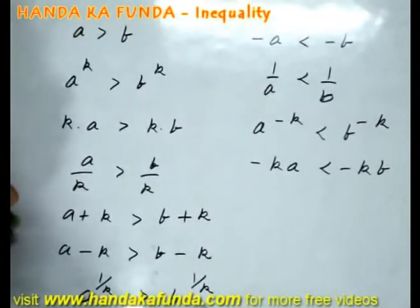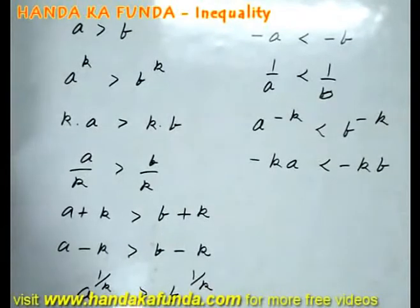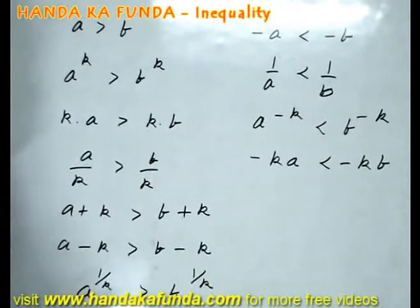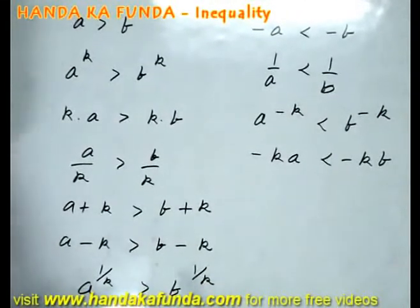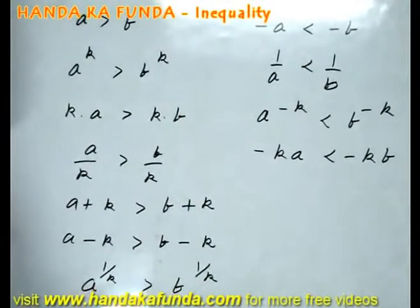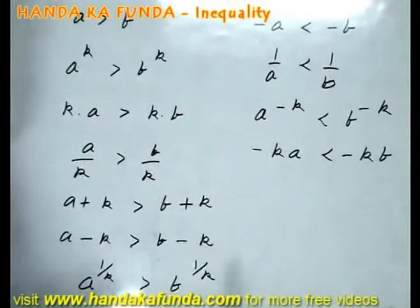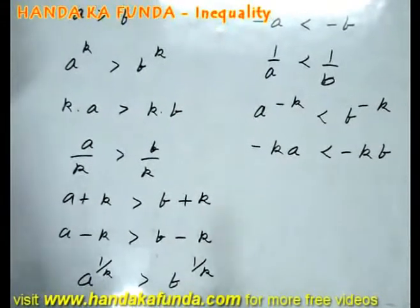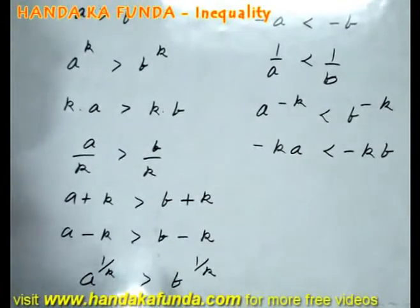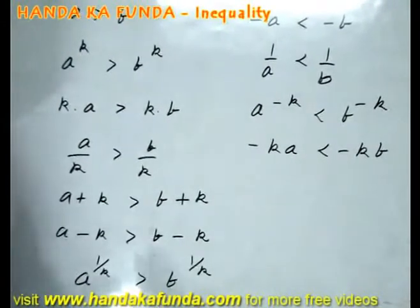If I take the kth root on both sides, the inequality is preserved as well. For example, if a is greater than b, then the square root of a is greater than the square root of b, and the cube root of a is greater than the cube root of b.